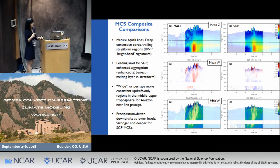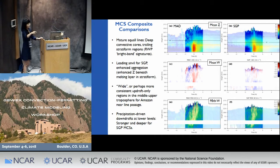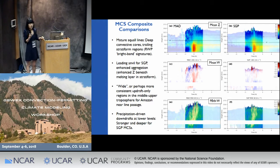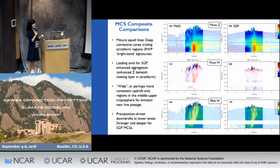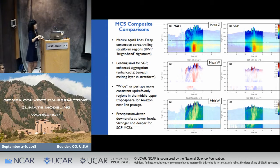I'm showing composite properties for the Amazon site on the left panel and SGP on the right. Starting from the reflectivity field on the top panel — remember they have very similar total precipitation properties — so it's not surprising to see a very similar look in the reflectivity field. You have this very strong consistent convective core, the broader trailing stratiform area with a bright band signature at the freezing level, and also very similar vertical echo top heights.